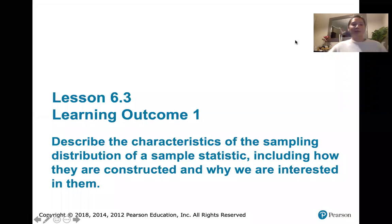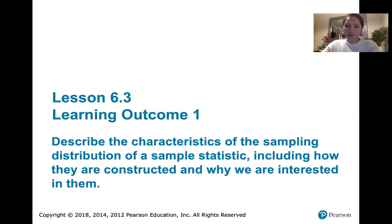In this video we discuss learning outcome number one from Lesson 6.3, which is all about sampling distributions of a sample statistic. After watching this video, you should be able to describe the characteristics of a sampling distribution, including how they are constructed and why we're interested in them.